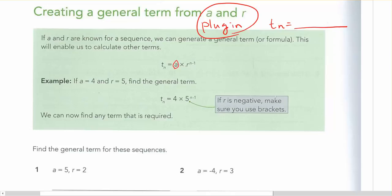You're just going to replace a and r, and the rest of it stays the same. Good hint for you: if r is negative, make sure you use brackets.